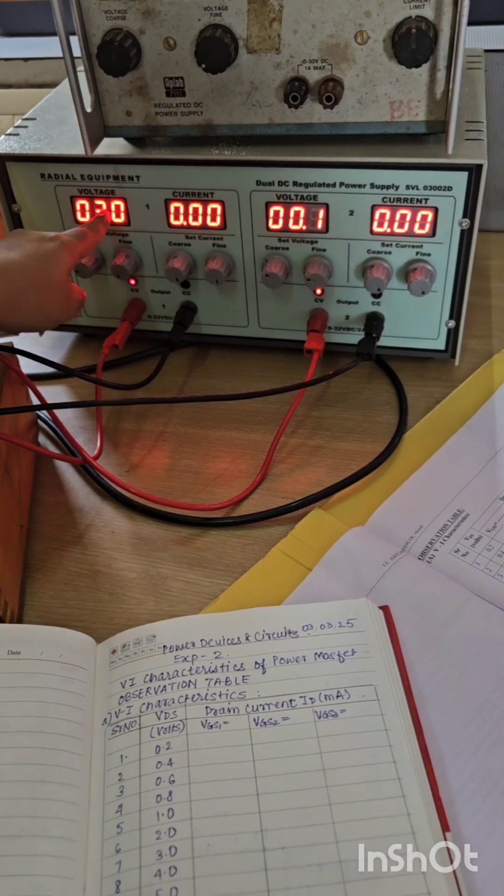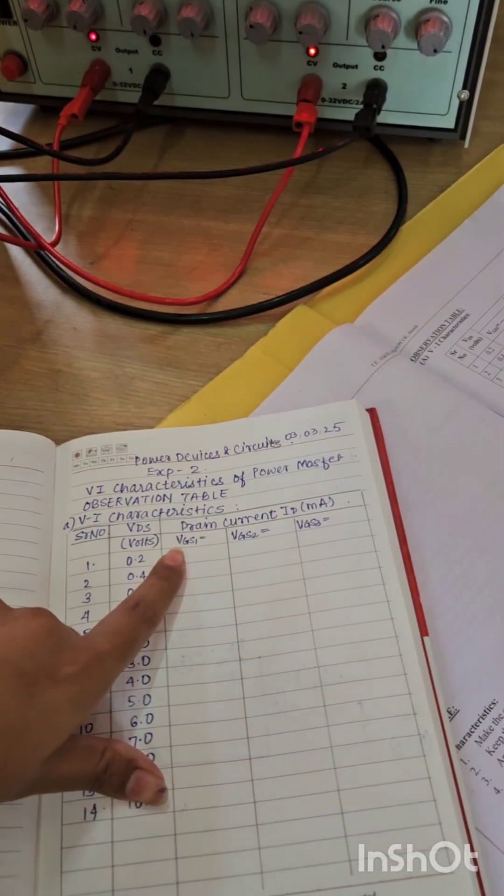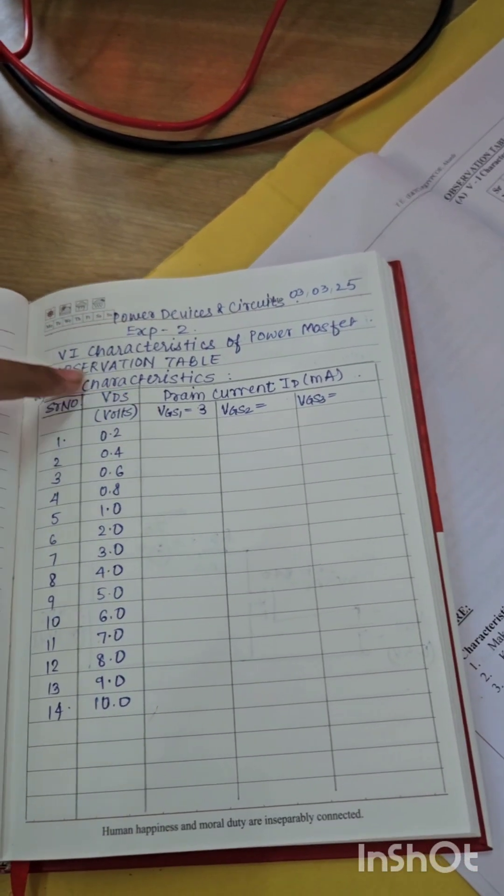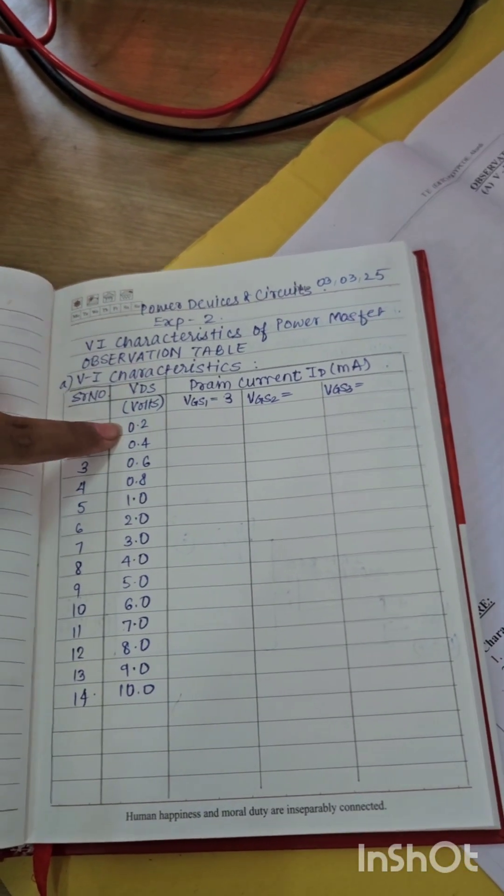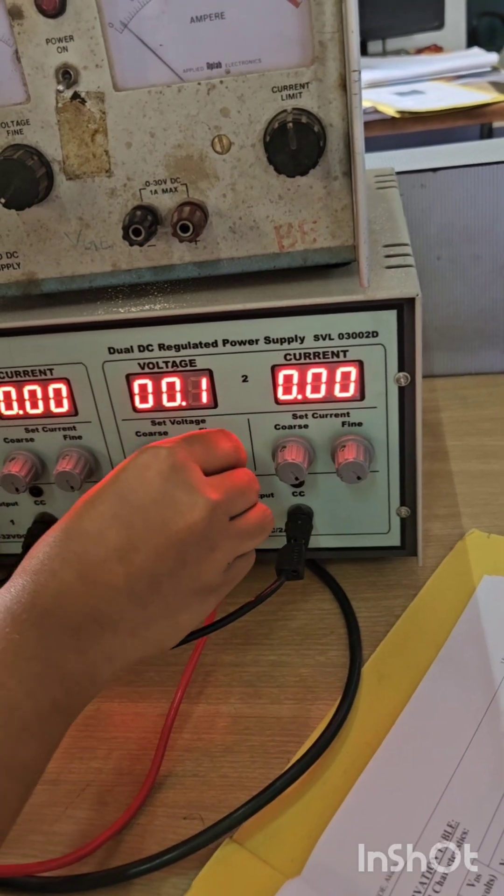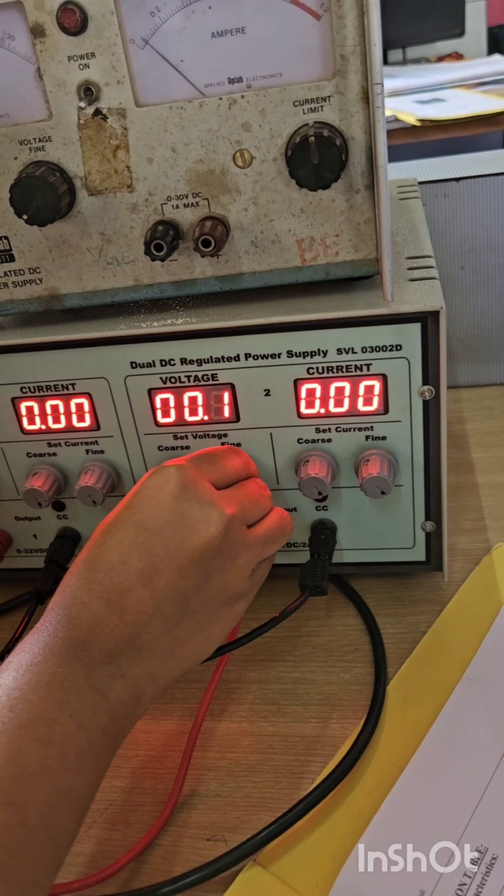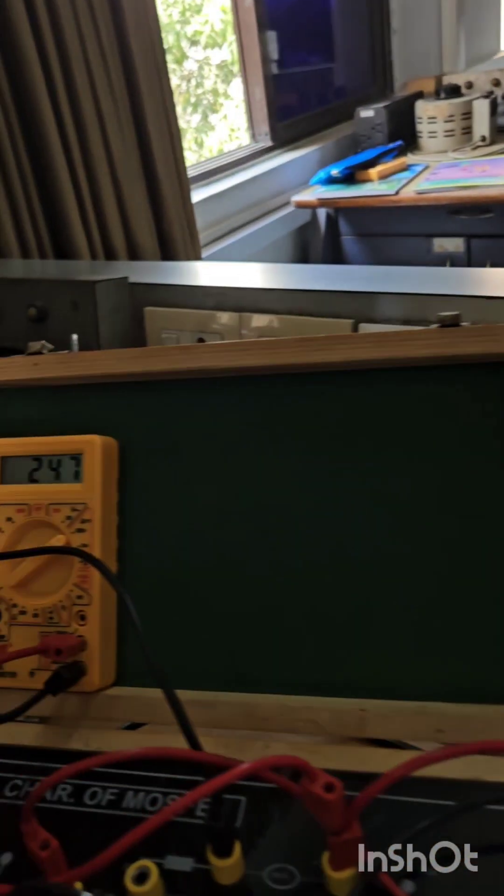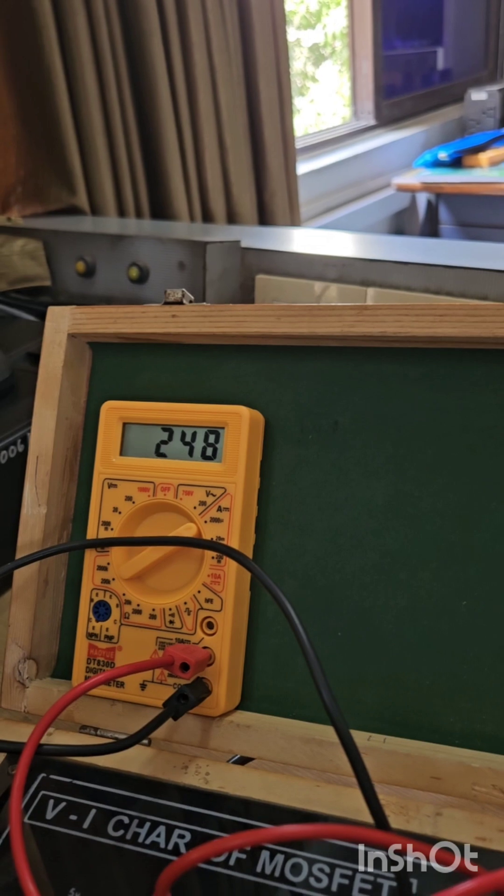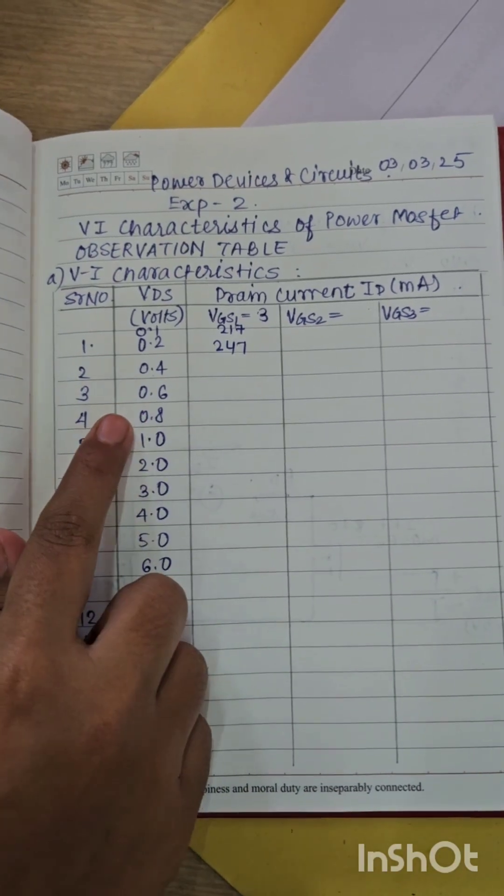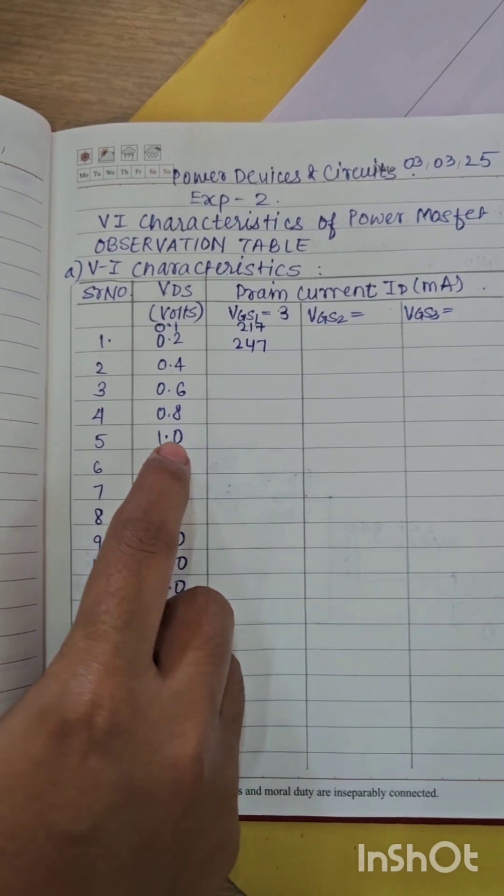3 volt is the value for VGS1. For constant VGS, vary VDS by 0.2 and so on. Make it 0.2, note down this value. This is for ID. Increase VDS by 0.2 up till it becomes equal to 1, and then increase it by 1.